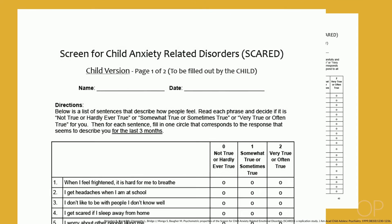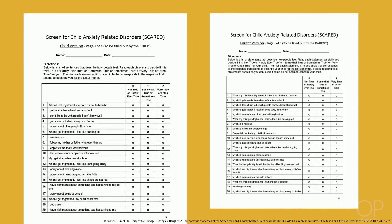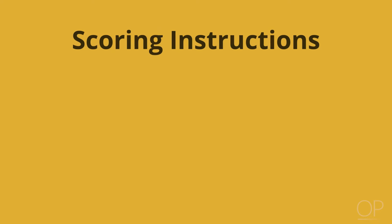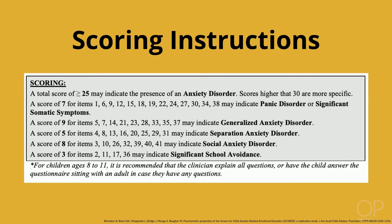One instrument is the SCARED screen, known as the Screen for Child Anxiety-Related Emotional Disorders. This comprehensive tool is a child and parent self-report instrument used to screen for several different anxiety disorders. It usually takes about 10 minutes to use and is intended for use in children aged 8 to 18 years. A total score of greater than or equal to 25 may indicate the presence of an anxiety disorder, with scores higher than 30 being more specific. High scores on certain groupings of questions may also indicate a specific anxiety disorder.